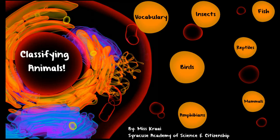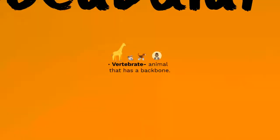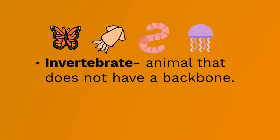Hi guys, this is Miss Cry from Syracuse Academy of Science and Citizenship. We're going to be talking about classifying animals. A vertebrate is an animal that has a backbone — in humans it's our spine, in our back, which is why it's called a backbone. It gives us structure and helps us stand up. An invertebrate is an animal that does not have a backbone, so there's less structure.